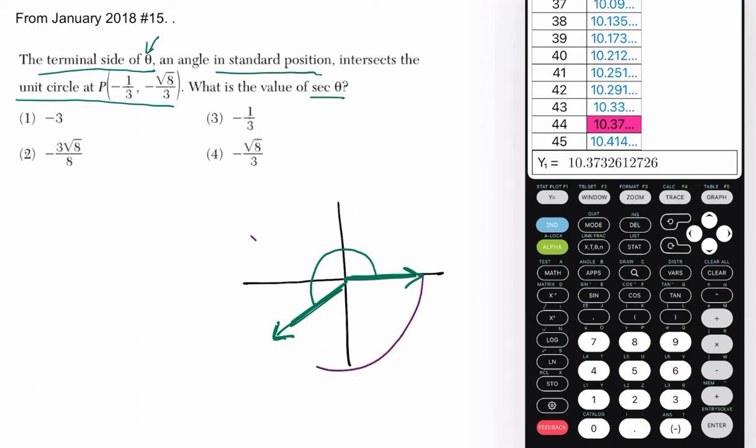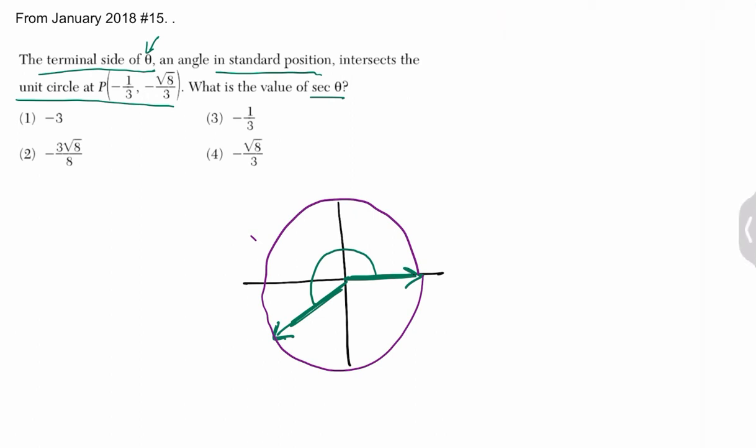Now, a unit circle is specifically a circle with a radius of 1. Let me just draw that right away. We can undo that, I can do a better job. All right, so this is my unit circle. Okay, that'll work.